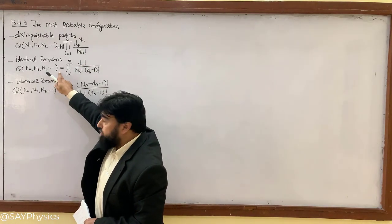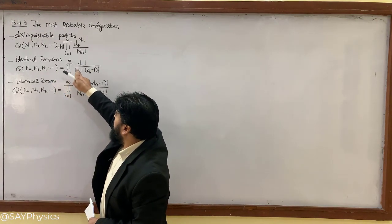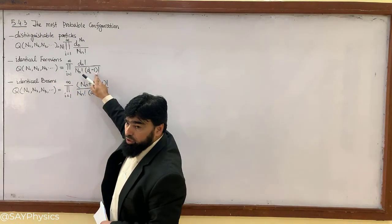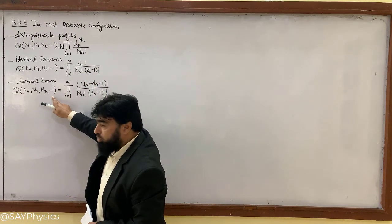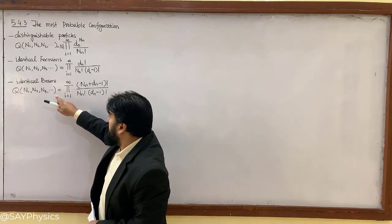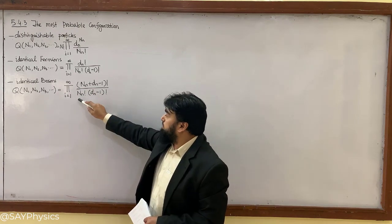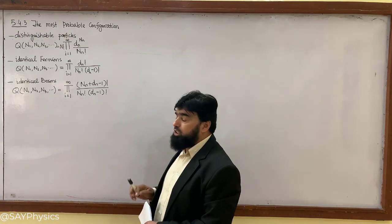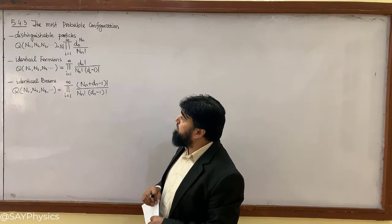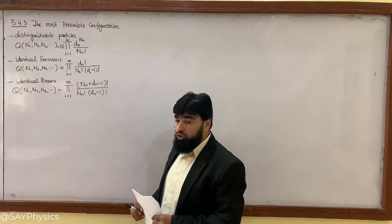Similarly, for identical fermions, we have the configuration equal to d_N factorial over N_N factorial times (d_N minus 1) factorial. While for identical bosons, which do not follow the Pauli exclusion principle, the configuration is (N_N plus d_N minus 1) divided by N_N factorial times (d_N minus 1) factorial. Our job is to find the most probable configuration for all three situations.